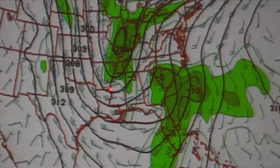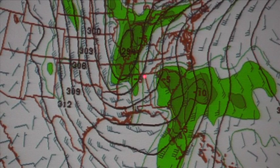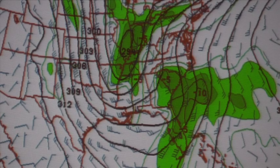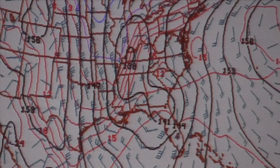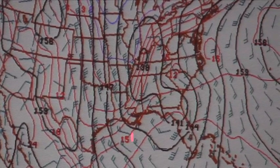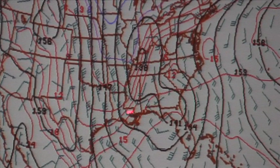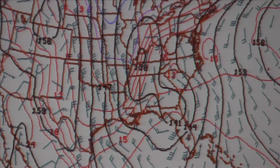On the 700 millibar 24-hour forecast, the moisture and lifting associated with this trough and low is starting to move closer to our area — we do have a negative five value just to the north of us with some moisture as well. On the 850 millibar 24-hour chart, the cold air advection in Mississippi and Louisiana is very strong right now; we are just starting to get into that cold air advection regime, though it's not very strong at Birmingham yet.